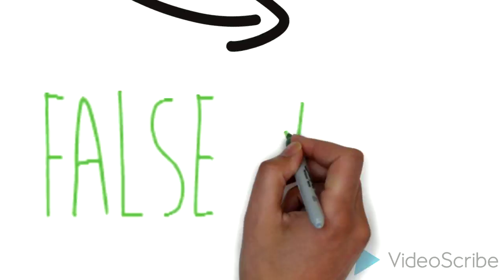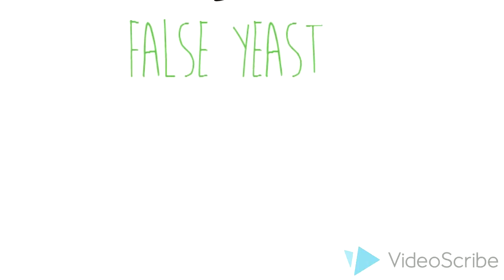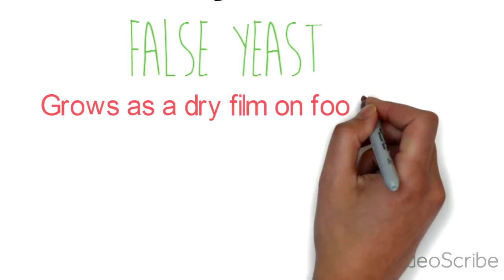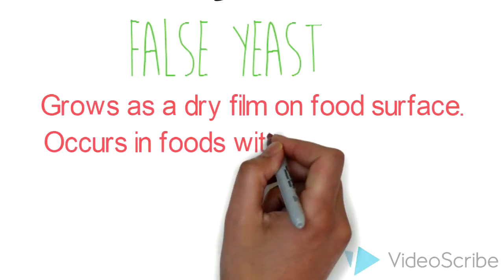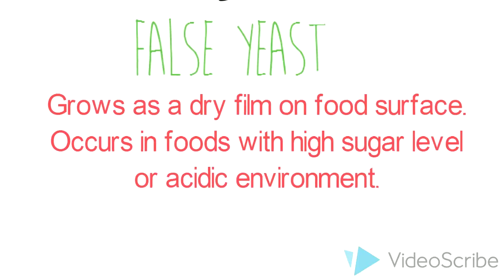The second type is false yeast. It grows as a dry form on food surface which occurs in foods with high sugar level or acidic environment.